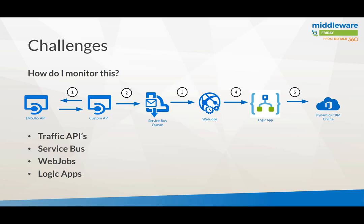A web job with a Service Bus trigger listened to that queue, picked up messages, and sent them to a Logic App that had a good Dynamics CRM connector. The complexity was in that connector, which made it easy to communicate with Dynamics CRM. Course participants and their registration statuses — started, completed — were recorded there. Holistically, the customer had enriched data about their customers, enabling marketing automation and more based on that expanded dataset.